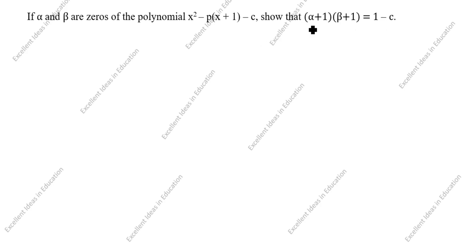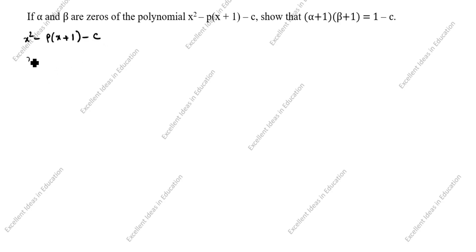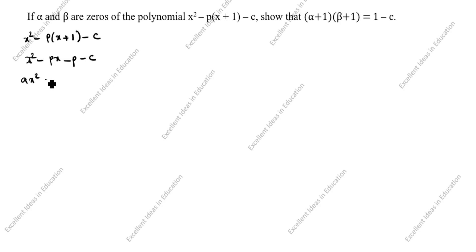Show that means we need to prove LHS equal to RHS. What is given in this question? x squared minus p(x plus 1) minus c. First we will remove the bracket: x squared minus px minus p minus c. What is the quadratic polynomial equation? ax squared plus bx plus c.